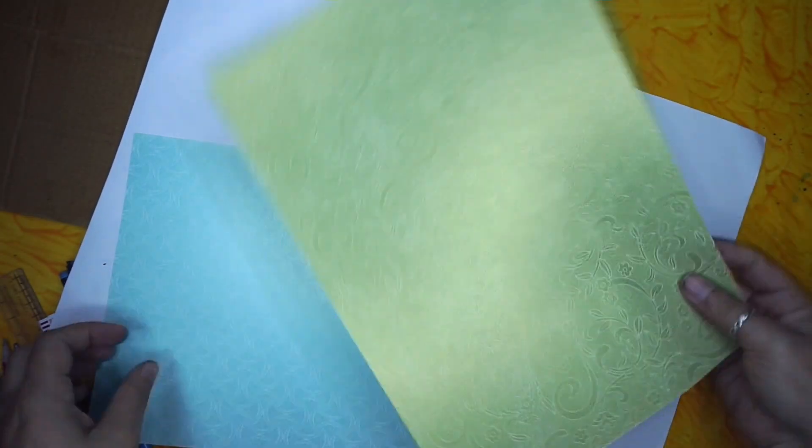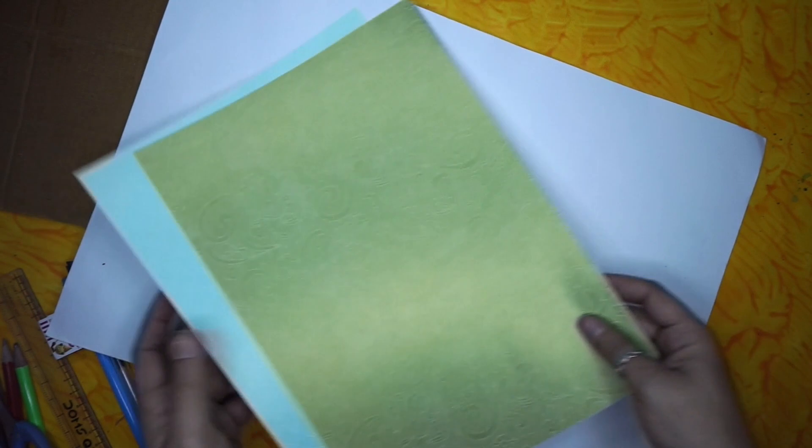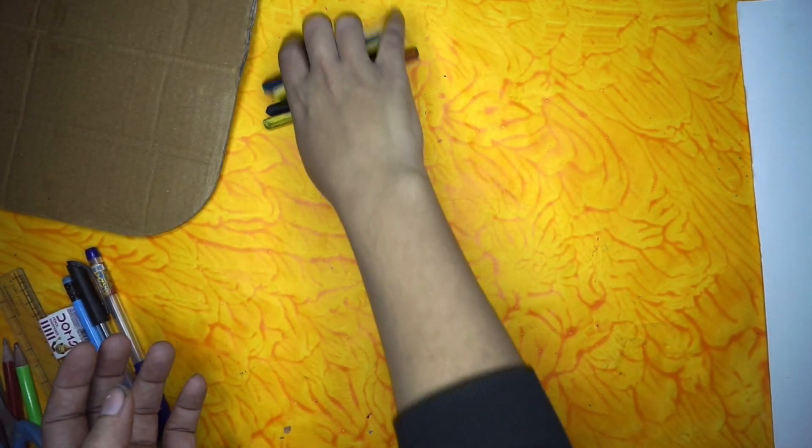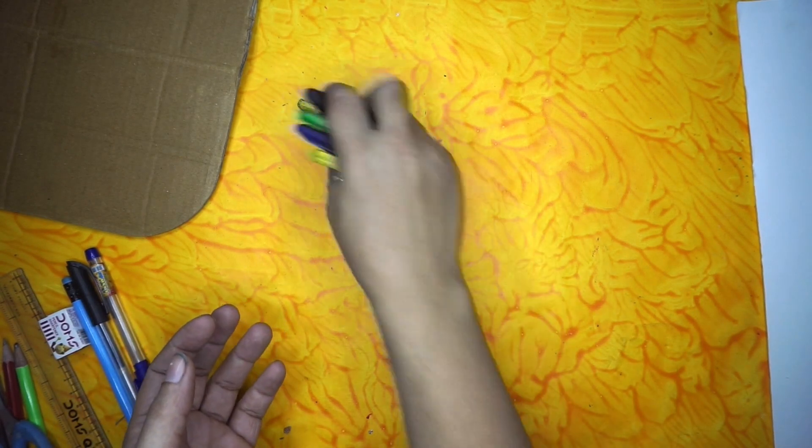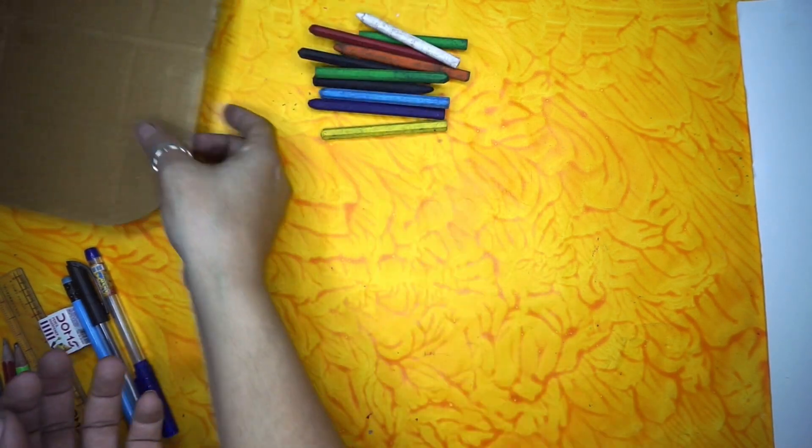To make this card, you need 3 A4 size white sheets, one printed colored A4 size sheet and one A3 size white sheet. Colors to paint, cardboard to support with some fabric, old scissors and basic stationery items.